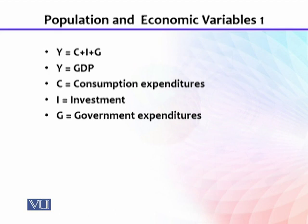We are not discussing any kind of exports or imports. Here Y is the GDP of a country — meaning the total annual income of the people within a country. This GDP consists of three things: consumption expenditures by people, investment expenditures by investors, and government expenditures.